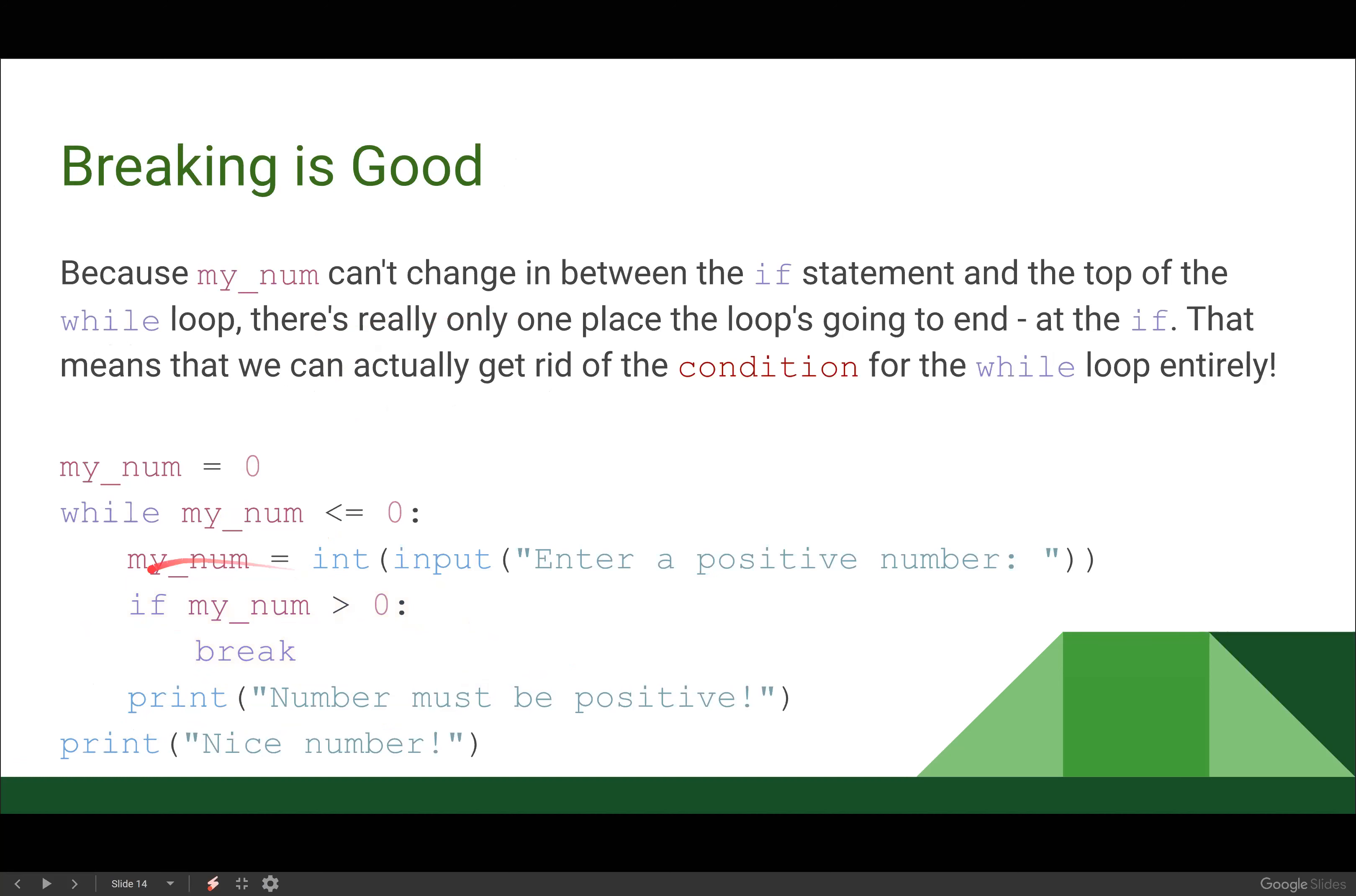Now, because my variable, my_num, isn't able to change in between my if statement and the condition for my while loop, there's really only one place that the loop is actually going to end, right? The loop is only ever going to end in this if. It's never going to get past the if and then end at this while loop condition.